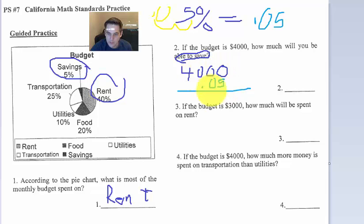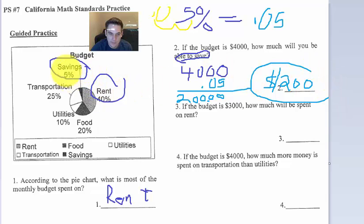So 5 times 0 is 0, 0, 0. 5 times 4 is 20. And then 0 is all around. All right, we got a decimal there, so a decimal there. So we're going to save $200. That's what 5% of 4,000 is. That's how you do it. Take that percent, turn it to a decimal, multiply it by the budget, and you get your total.